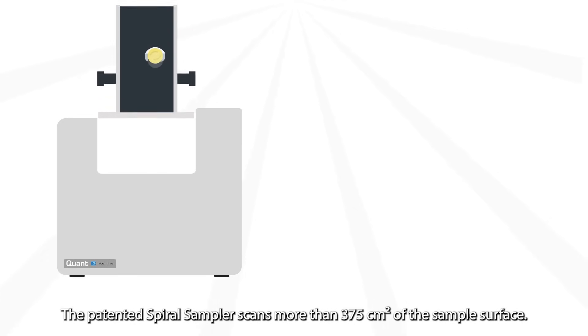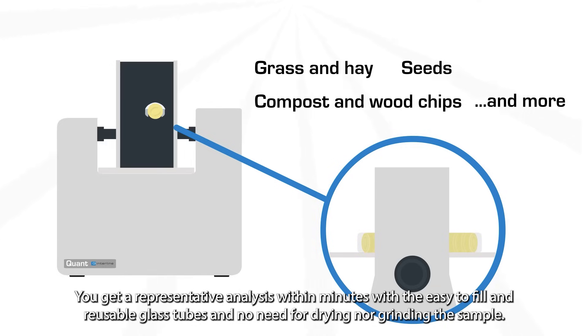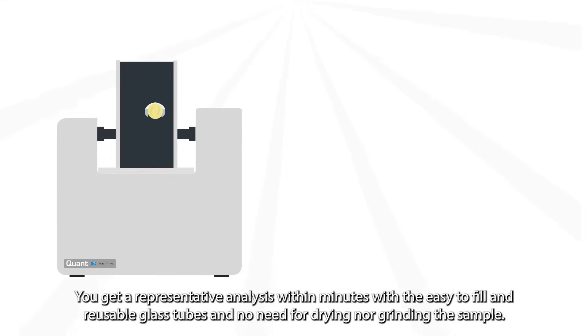The patented Spiral Sampler scans more than 375 cm² of the sample surface. You get a representative analysis within minutes with the easy-to-fill and reusable glass tubes and no need for drying nor grinding the sample.